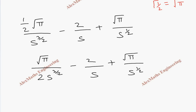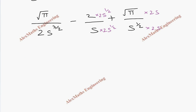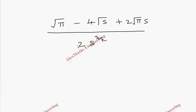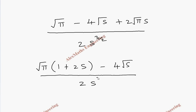We can rewrite this as root pi by 2 s to the power 3 by 2, minus 2 by s, plus root pi by s to the power half. Taking a common denominator of 2 s to the power 3 by 2, and multiplying through accordingly, we get root pi minus 4 root s plus 2 root pi times s, all divided by 2 s to the power 3 by 2. Taking root pi common from the first and third terms, the final answer is root pi times 1 plus 2s, minus 4 root s, all divided by 2 s to the power 3 by 2.